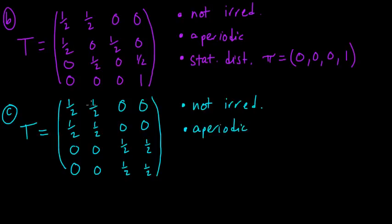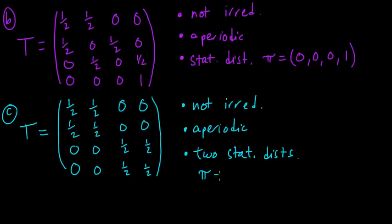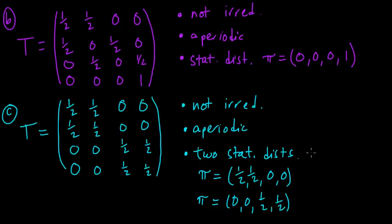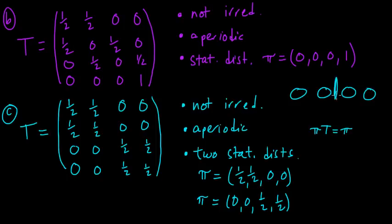It is still aperiodic. That's clear because for many states you can just stay at that state at the next time — the diagonal here is positive, so that's a simple way to see it's aperiodic. And the interesting thing is that there are two stationary distributions. A stationary distribution is not necessarily unique. Both of these satisfy that equality. The idea is you've got these four states with a wall in between, so you can break it up into two separate Markov chains.